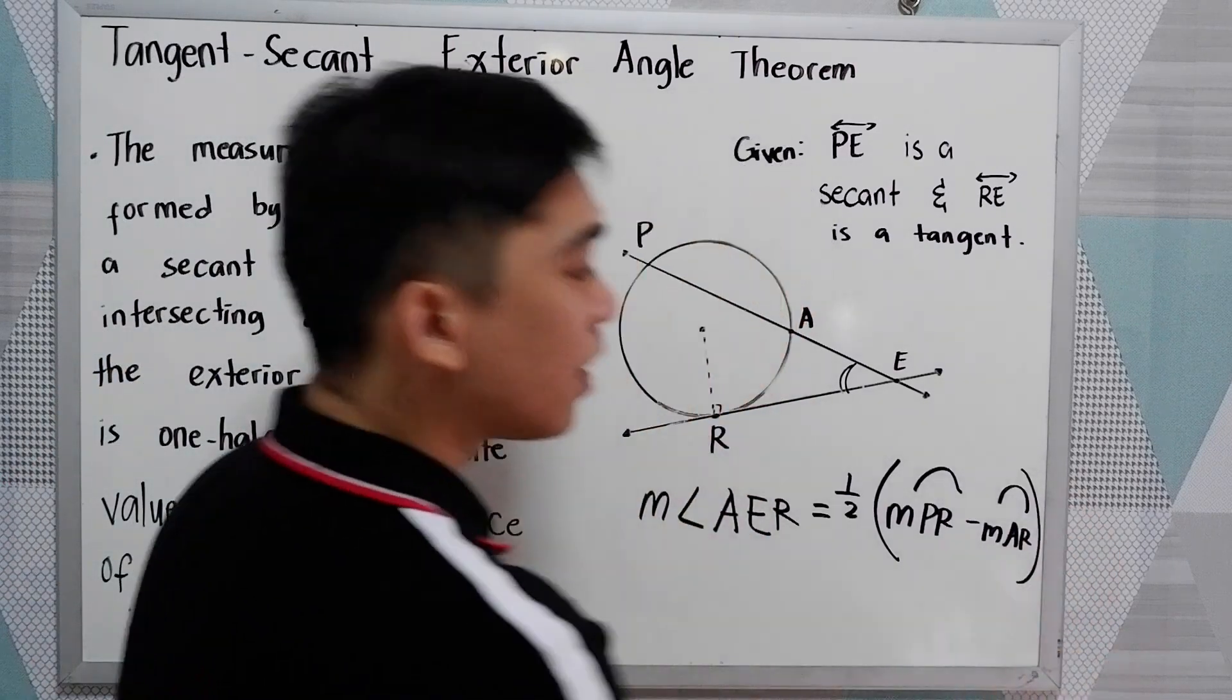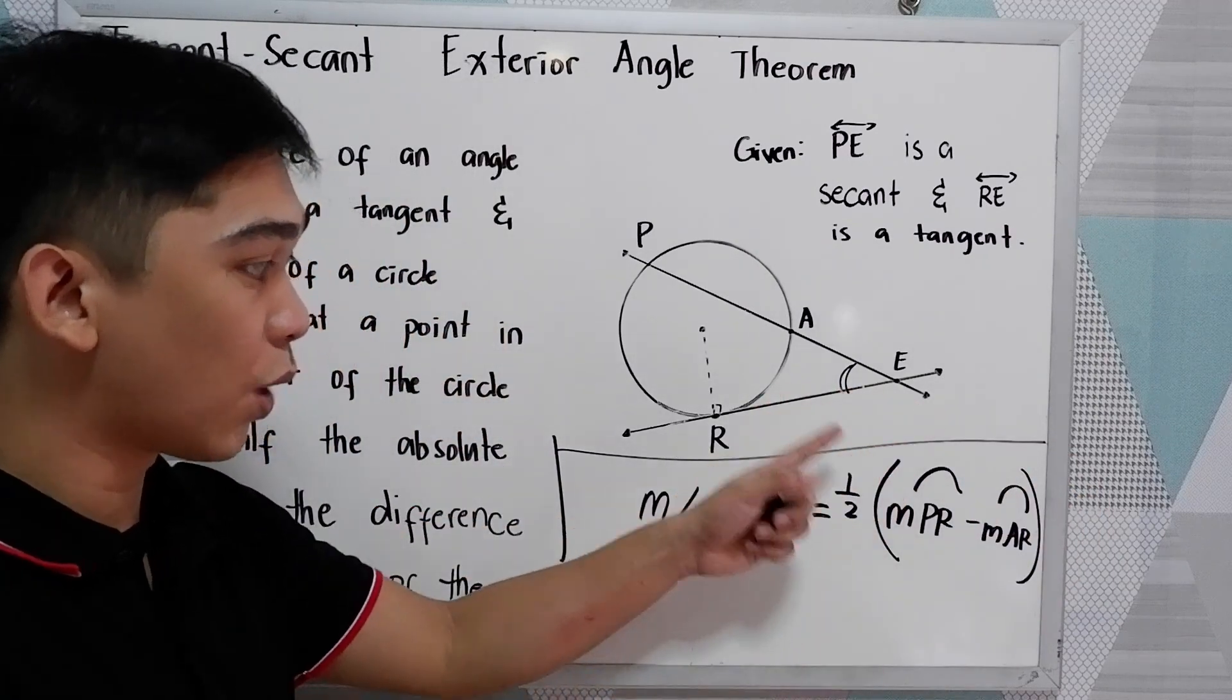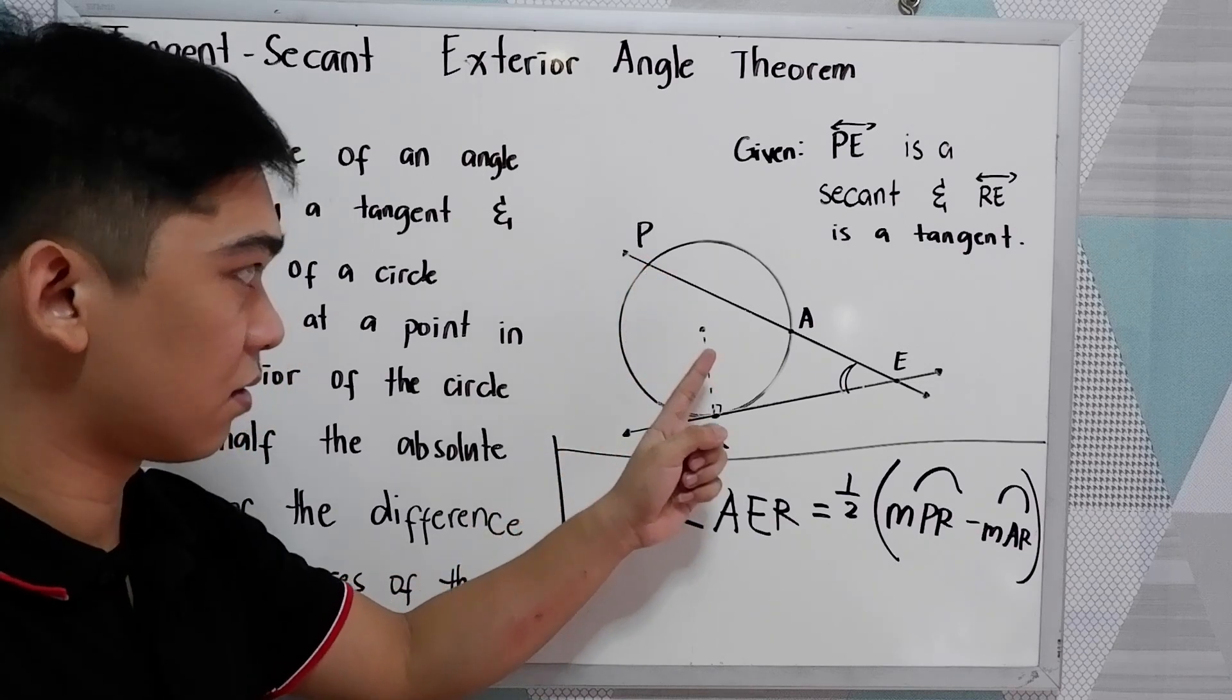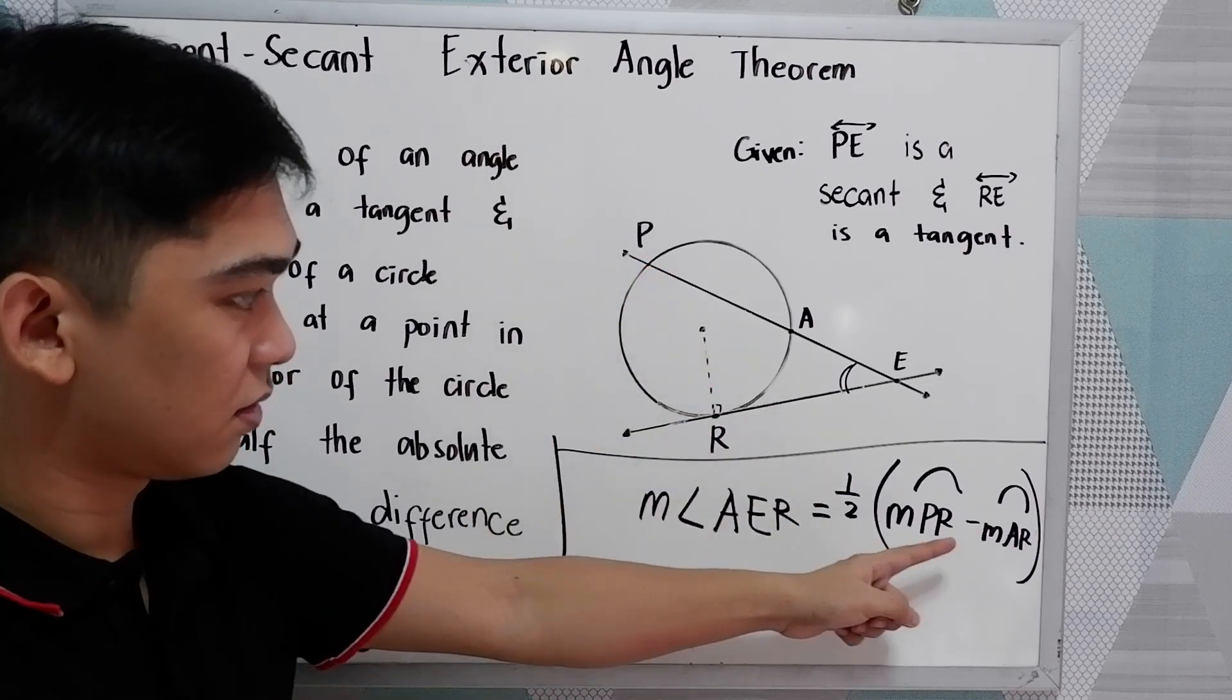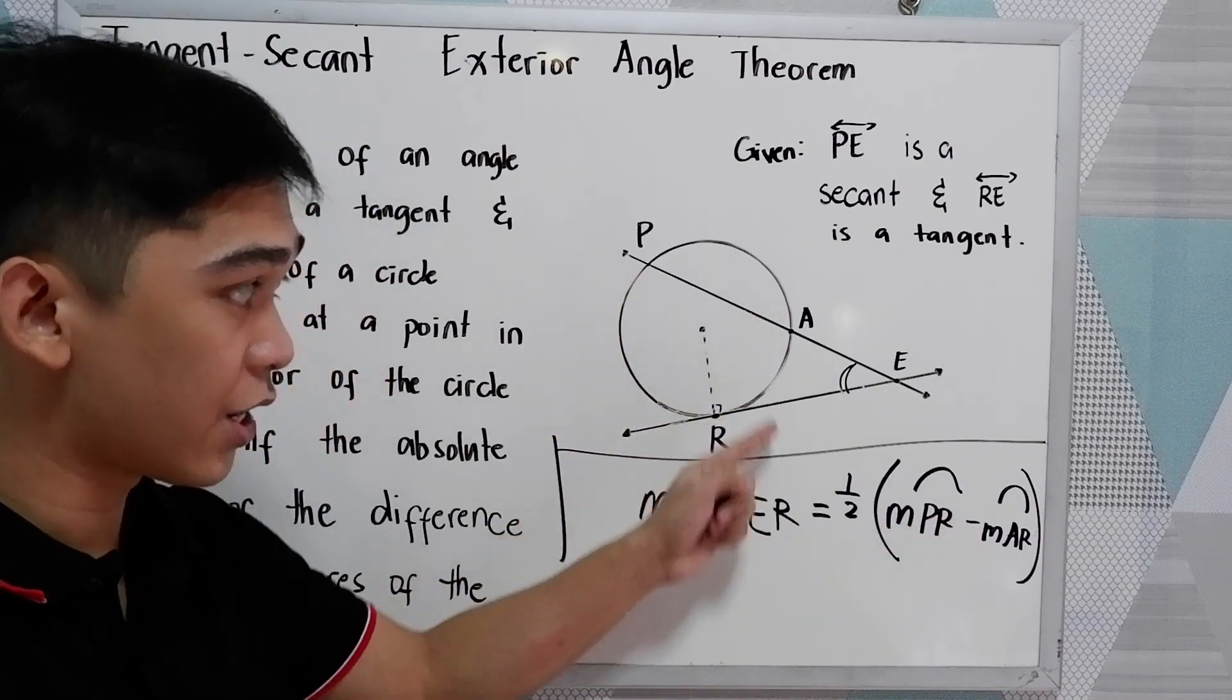Okay, that would be our conclusion. The measure of the exterior angle is equal to one-half of the measure of the intercepted arcs. So the difference of the intercepted arcs, PR minus AR.